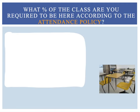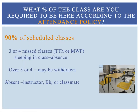What percent of the class are you required to be here according to the attendance policy? Pause the video to find the answer, then restart the video to see if you're correct. You're required to be here for 90% of the scheduled classes. For a Monday, Wednesday, Friday class, you can miss four classes. For a Tuesday, Thursday class, you can miss three classes. If you miss more than the allowed number of classes, you may be withdrawn.